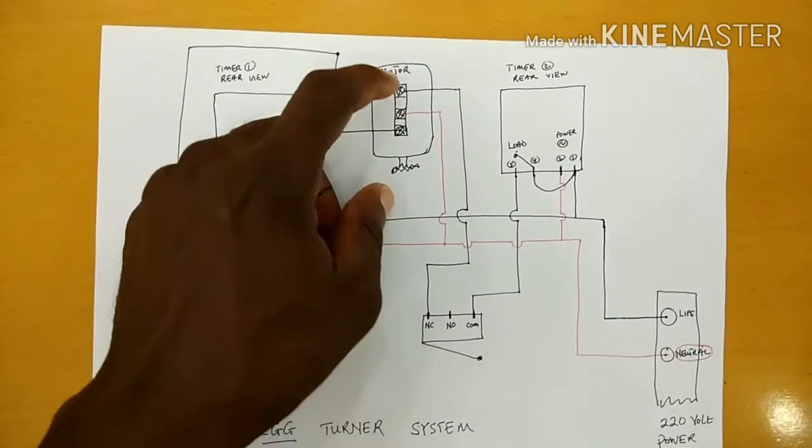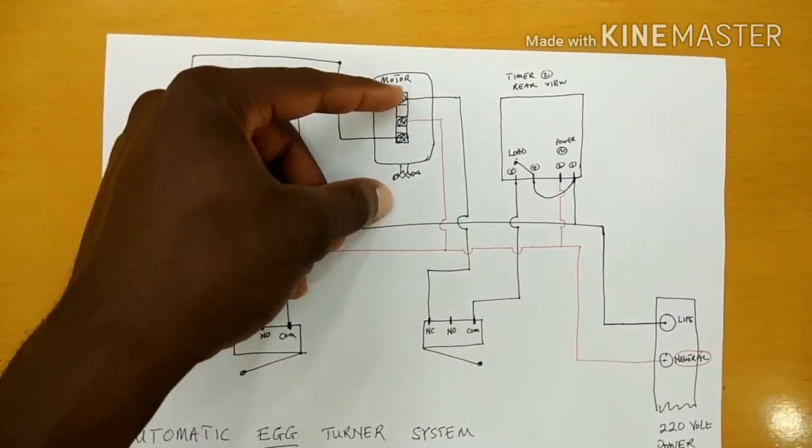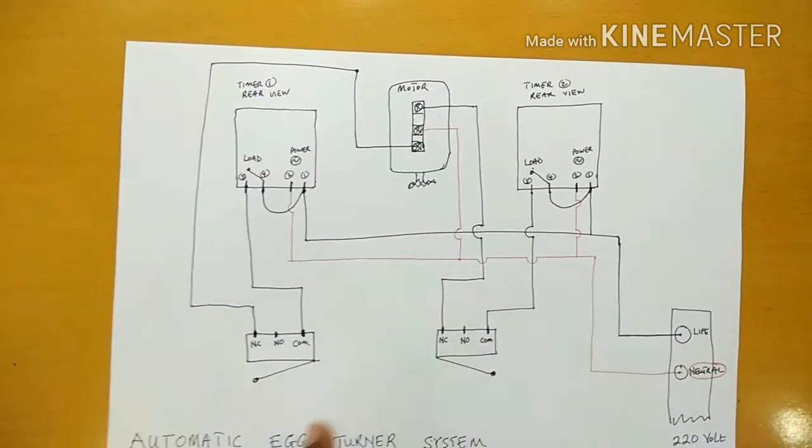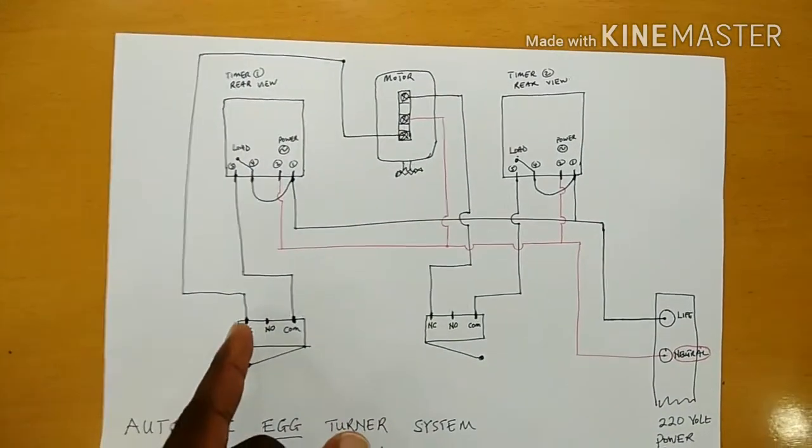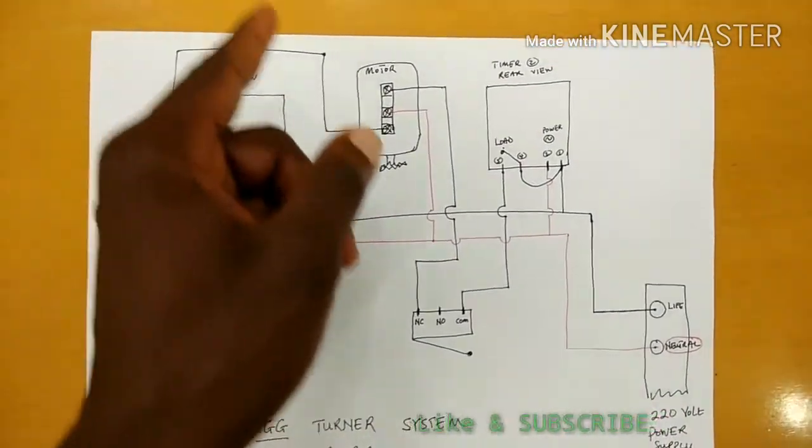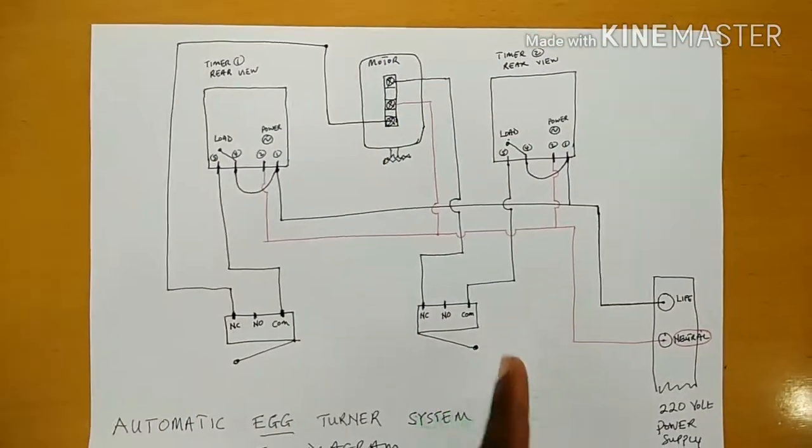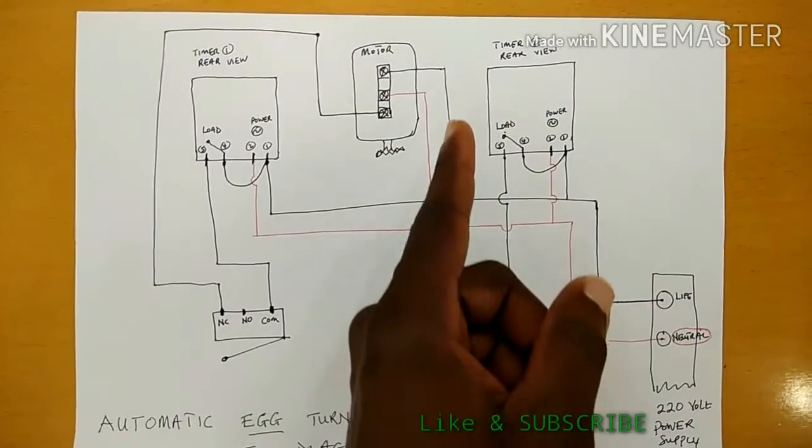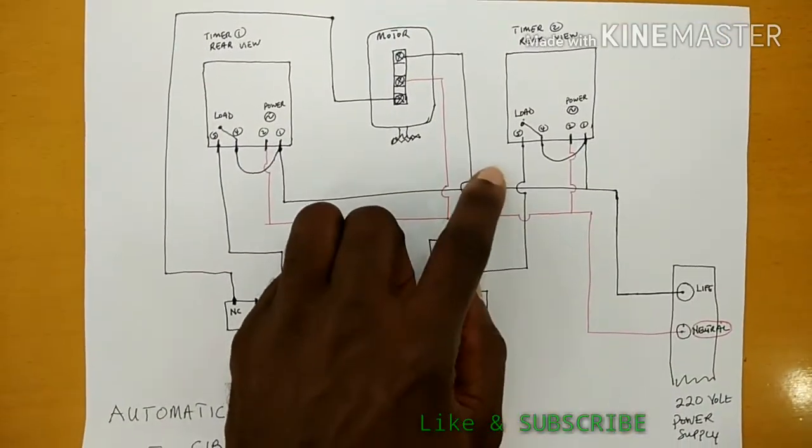You have life feeding to the other side, the left or the right side. One life from one of the limit switches and then the other life from the second timer.